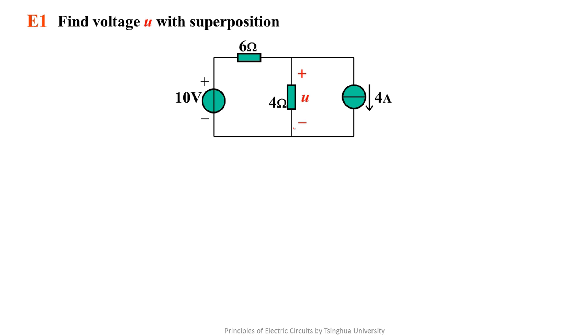For such a simple circuit, it's extravagant to use the superposition theorem. Suppose this is a reference node, by applying the node voltage method, we get that 1 over 6 plus 1 over 4 times U equals 10 over 6 minus 4. Then we solve U immediately, but we need to practice the superposition theorem here.